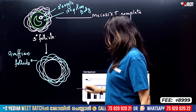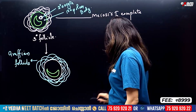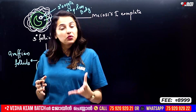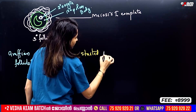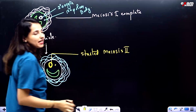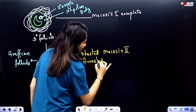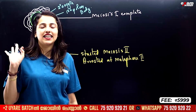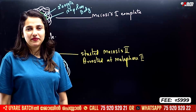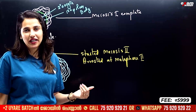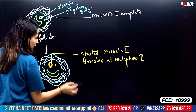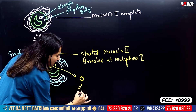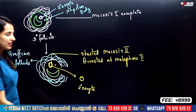The Graafian follicle has a large cavity and contains the secondary oocyte with a polar body. The secondary oocyte has started meiosis II but is arrested at metaphase II. Finally, in the menstrual cycle, when the Graafian follicle is mature, it ruptures — releasing the secondary oocyte. This release is called ovulation.